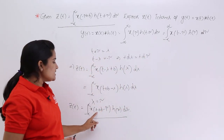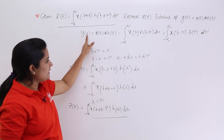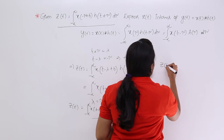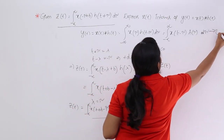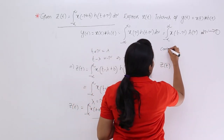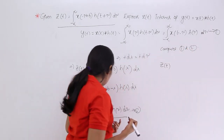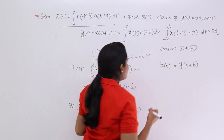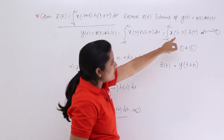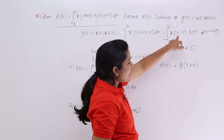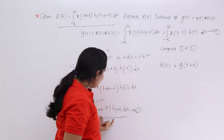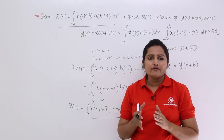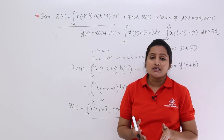If you compare Z of t with Y of t — in equation 1 we have a shift for the input signal, not for the impulse response. Comparing the two equations, in place of t we are having t plus B. That means in Y of t, if you put t plus B in place of t, you get the same equation. So Z of t is equivalent to Y of t plus B. For example, substituting t plus B in place of t in Y of t gives the integral of X of t plus B minus tau, H of tau, d tau — the same result. Like this way you can represent Z of t in terms of Y of t, which is the convolution of X of t with the impulse response. Questions like this are asked in technical exams like GATE.